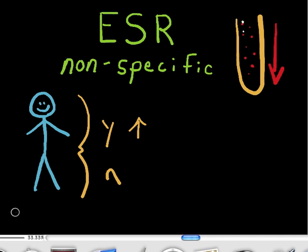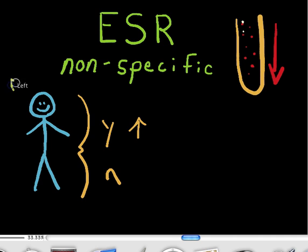If we look at the body here, just to get an idea of some of the reasons we might have inflammation — let's start at the top and work our way down. Autoimmune disorders are going to cause inflammation, and there are tons of autoimmune disorders that can give you an elevated ESR result.